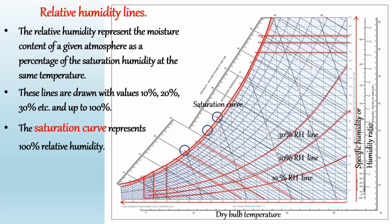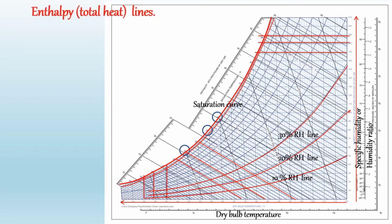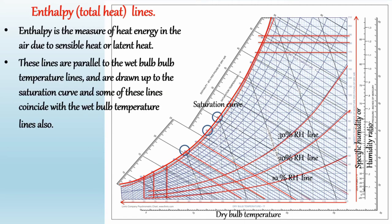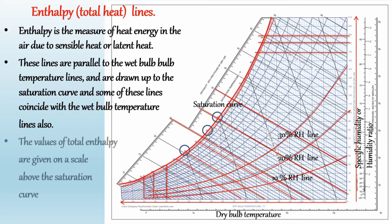The next line is the enthalpy or total heat line. Enthalpy is the measure of heat energy in the air due to sensible heat or latent heat. In the psychometric chart, the enthalpy or total heat lines are inclined straight lines and uniformly spaced. These lines are parallel to the wet bulb temperature lines and are drawn up to the saturation curve. Some of these lines coincide with the wet bulb temperature lines. The values of total enthalpy are given on a scale above the saturation curve.